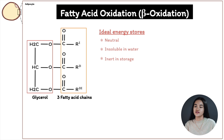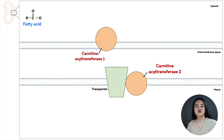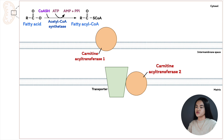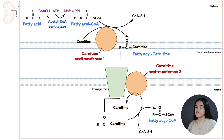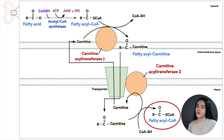Before we break down beta-oxidation, let's quickly recap the process of transporting fatty acids to the mitochondria. We need to transport fatty acids into the mitochondrial matrix because the enzymes involved in fatty acid oxidation are found there. Before transport, we first need to activate the fatty acid by combining it with CoA to produce fatty acyl-CoA. We then substitute CoA for carnitine, and it passes through the intermembrane space into the matrix through the carnitine co-transporter. In the final step, the fatty acyl group is transferred back to CoA. So now the fatty acids are in the mitochondrial matrix and will undergo beta-oxidation.